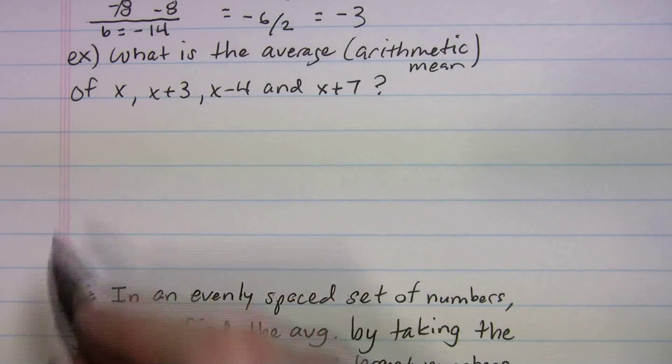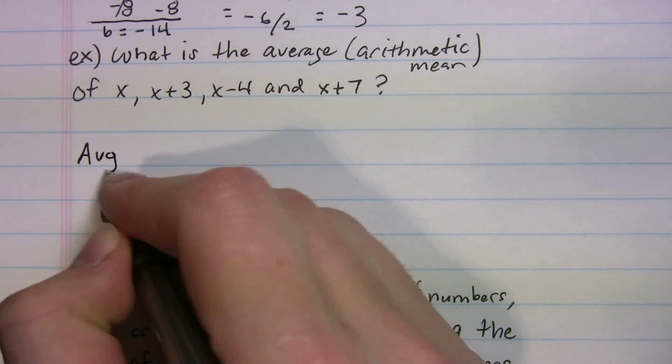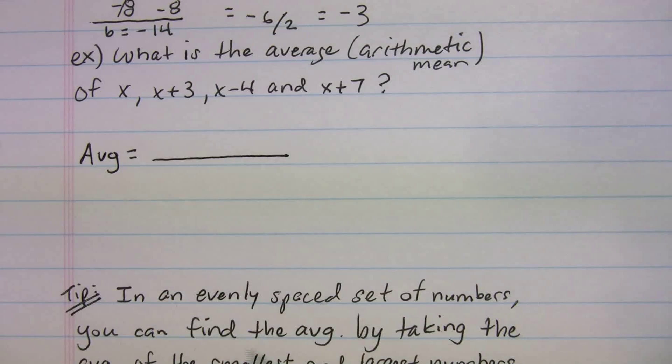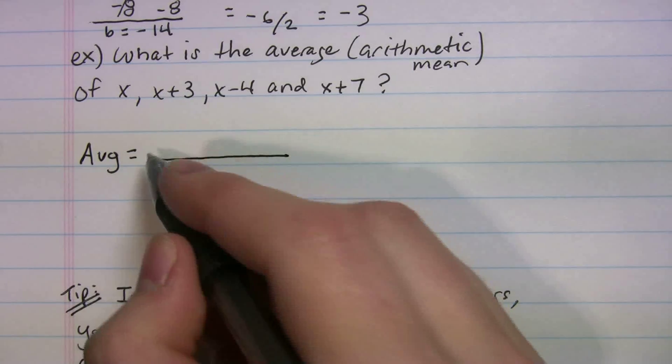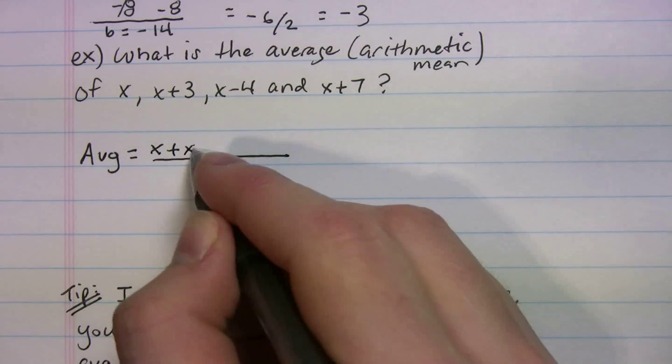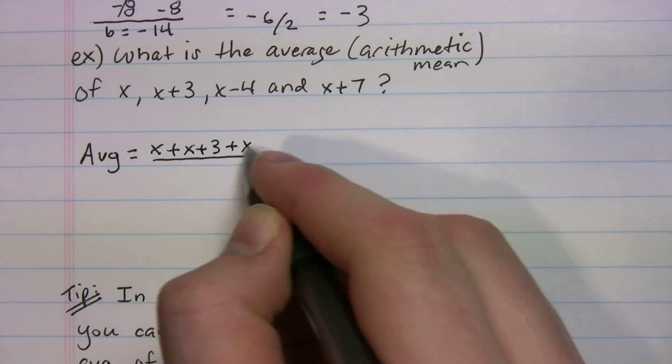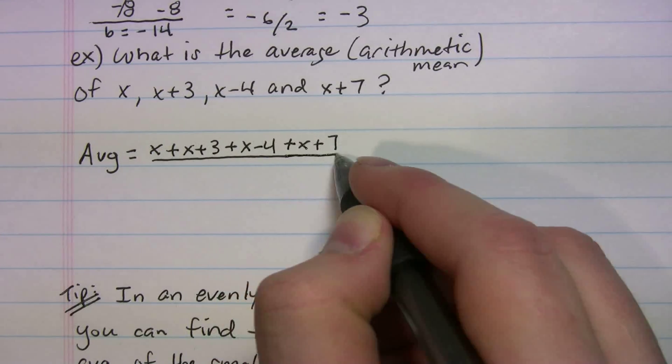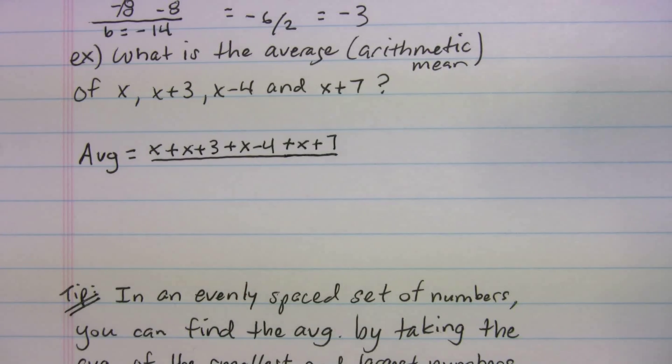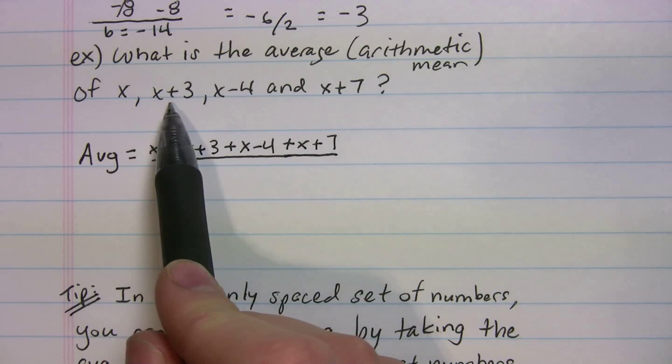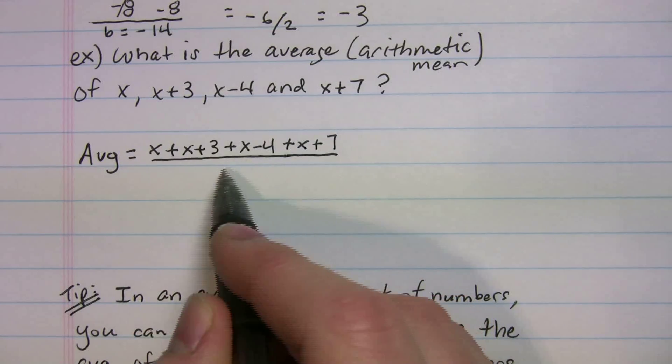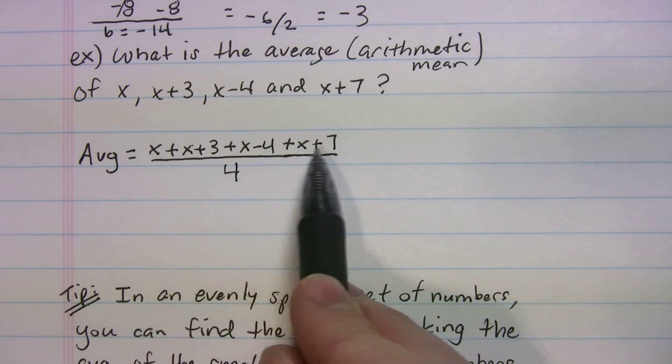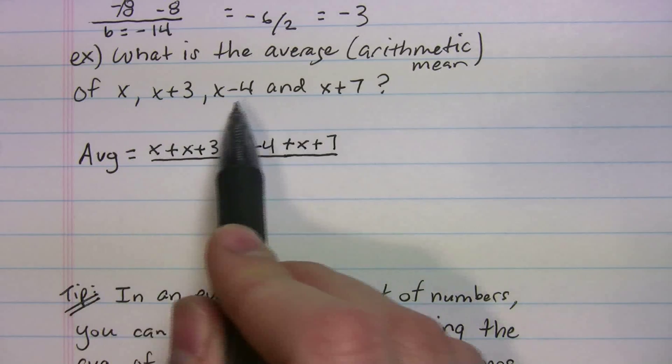All right. So again, we're going to plug into the average formula. So we don't know our average, right? But what are we adding up? We're going to add up all this stuff. So let's do that: x plus x plus 3 plus x minus 4 plus x plus 7. How many things did I add up? Well, you have 1, 2, 3, 4. It's not all these separate things, right? Don't get confused by that. It's 1, 2, 3, 4 things.